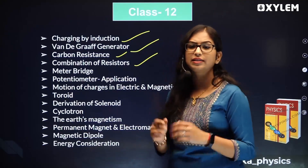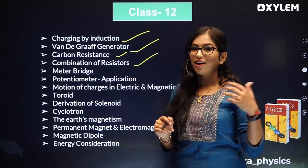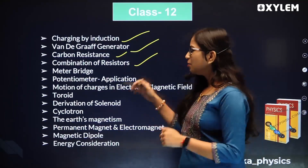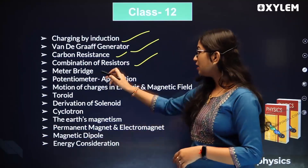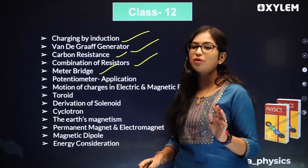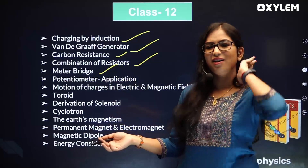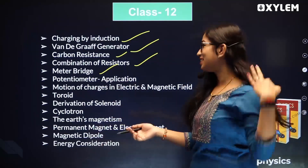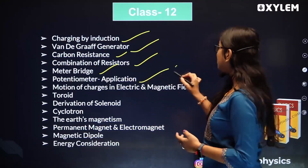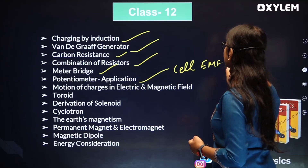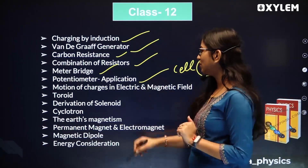Combination of resistance is deleted since we learned it in 10th. Meter bridge is deleted - even though it has practical value. Potentiometer and its applications - using it to find EMF and compare cells - that is also deleted. Next, motion of charges in electric and magnetic field is deleted. Toroid is also deleted. Solenoid is still a topic but purely conceptual.